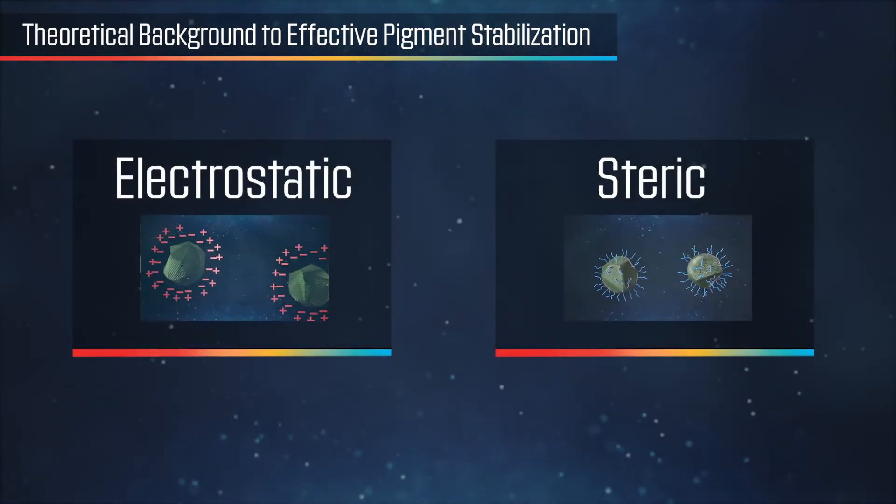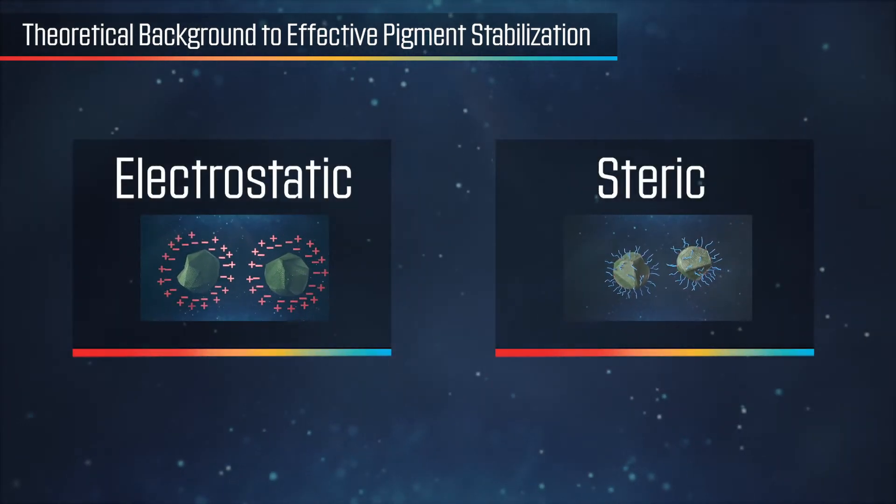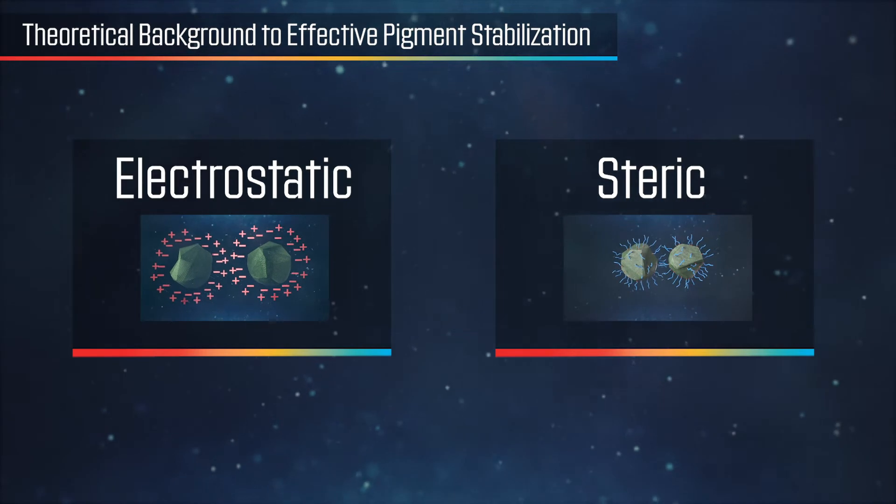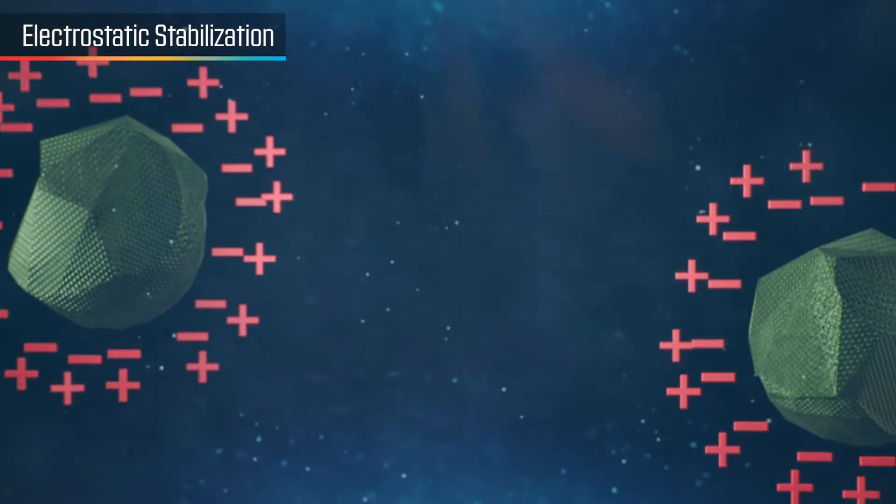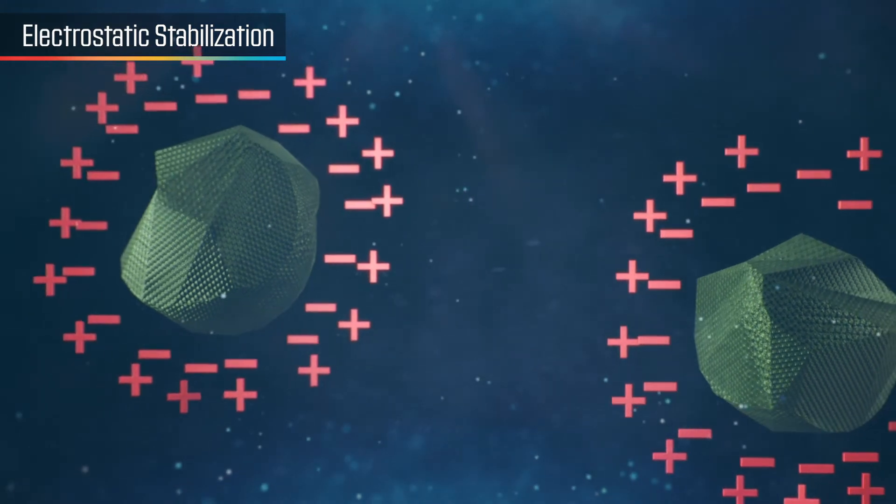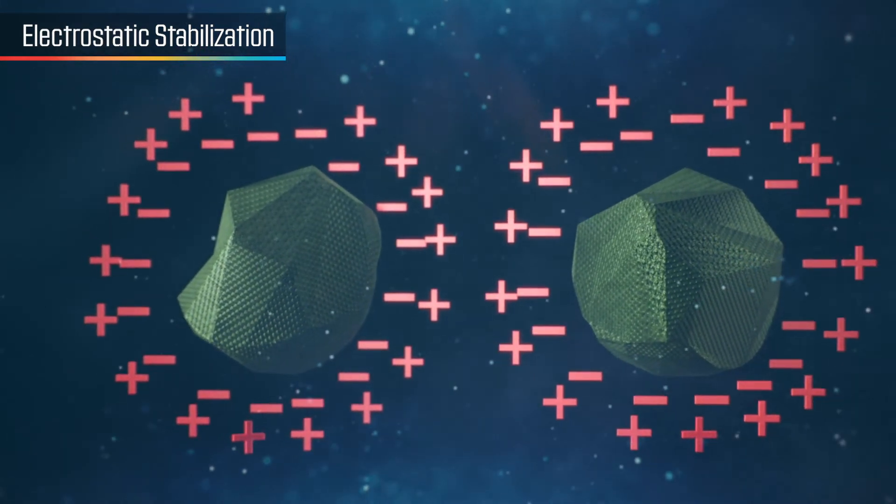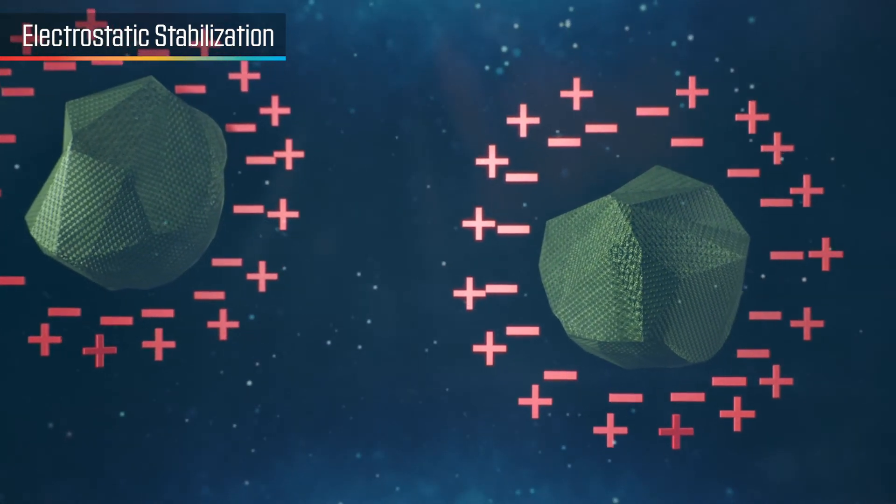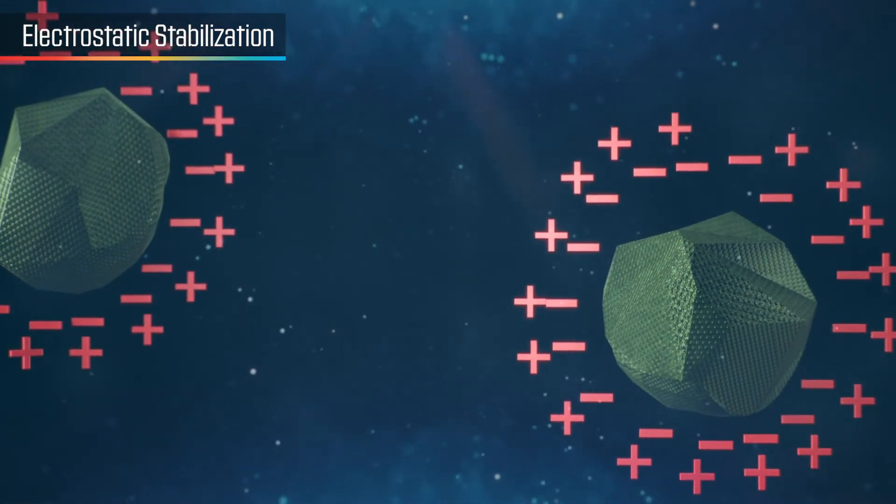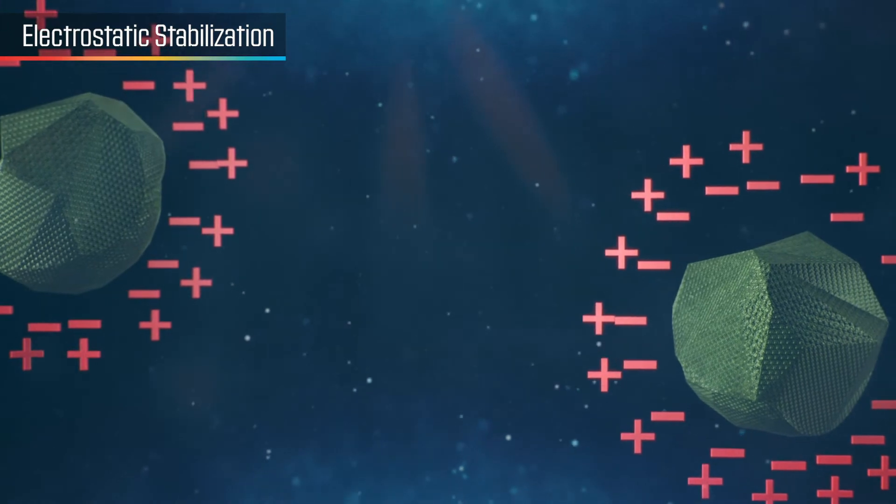There are multiple methods to stabilize a pigment in a medium, but electrostatic and steric are the two main types. Electrostatic stabilization, also known as charge stabilization, uses electromagnetic forces to achieve particle separation. It is effective only in high-polarity systems like water.